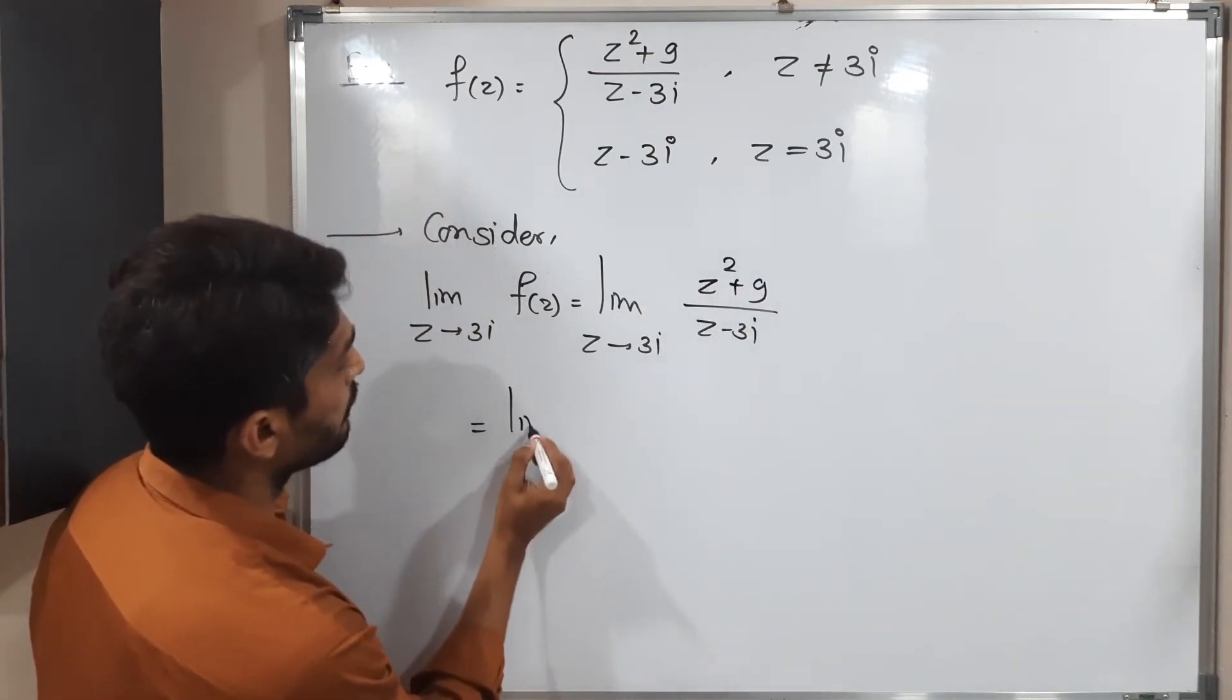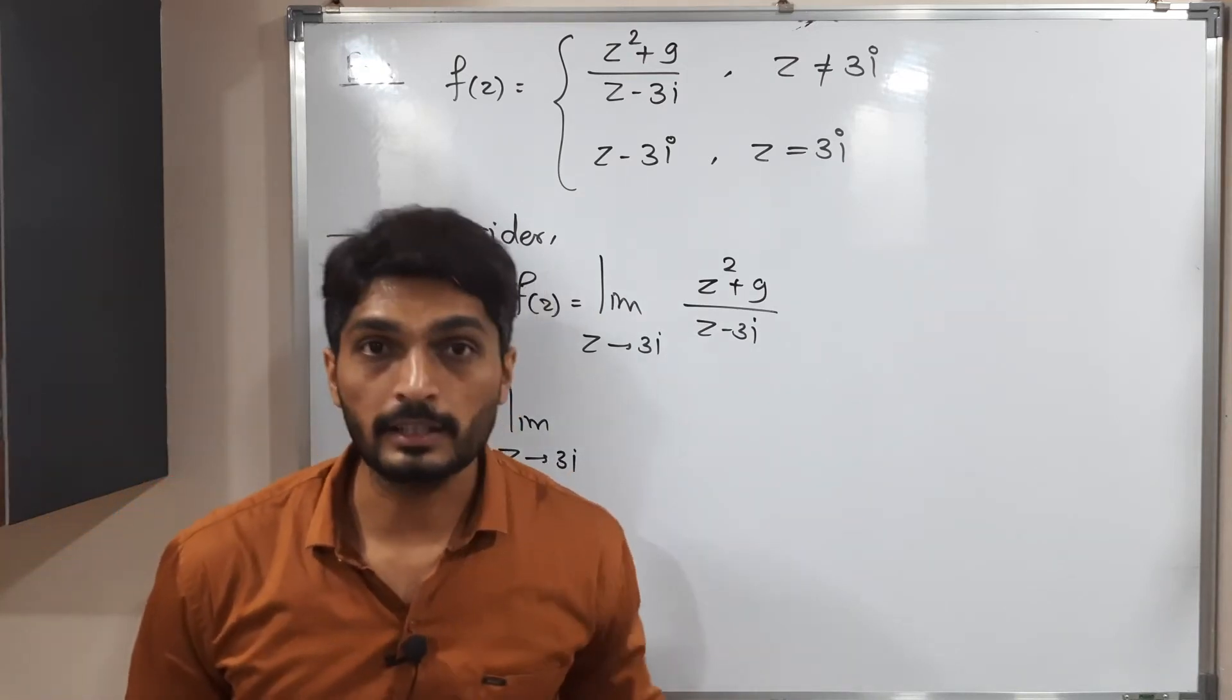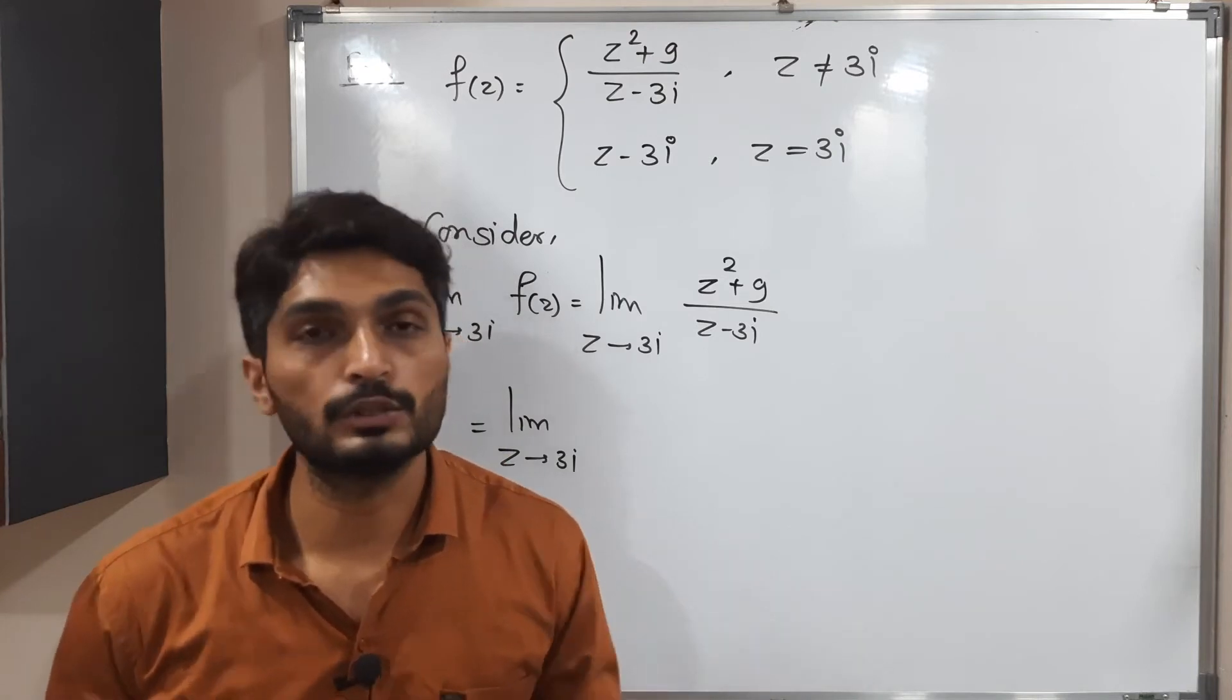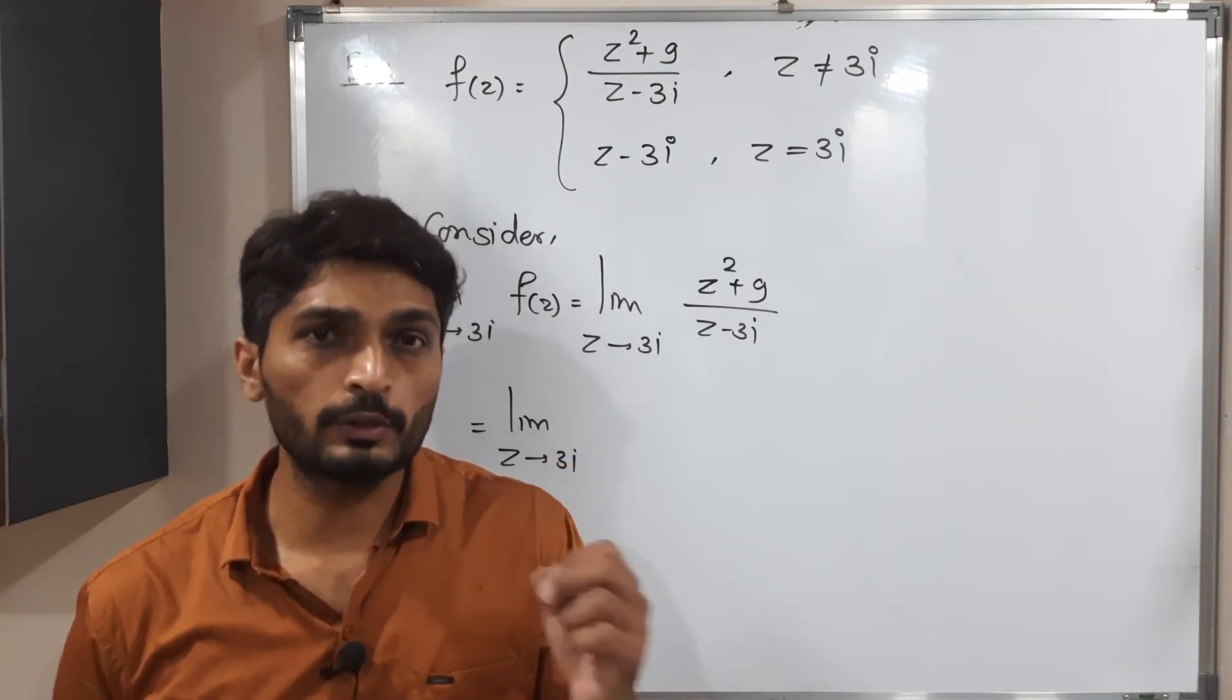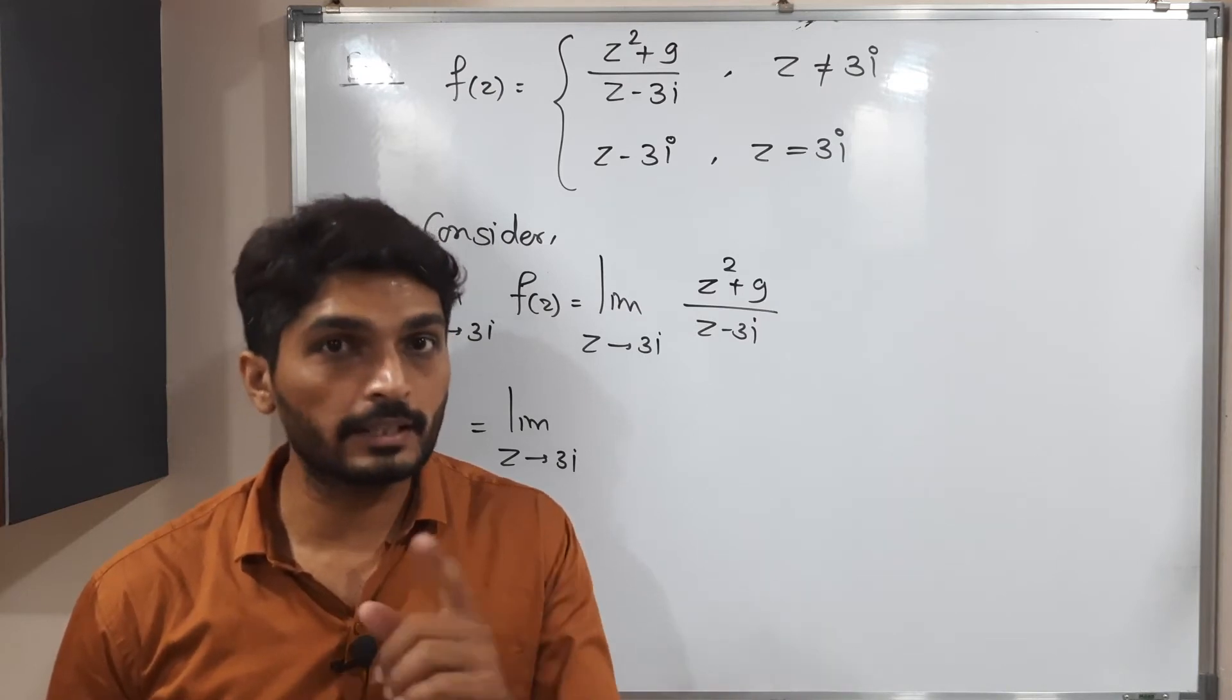This is equal to limit z tends to 3i. If you put z is equal to 3i directly, we will have 0 upon 0 form, which is not defined. So we need to use some techniques, some formulas of mathematics. And we need to cancel the denominators from here.